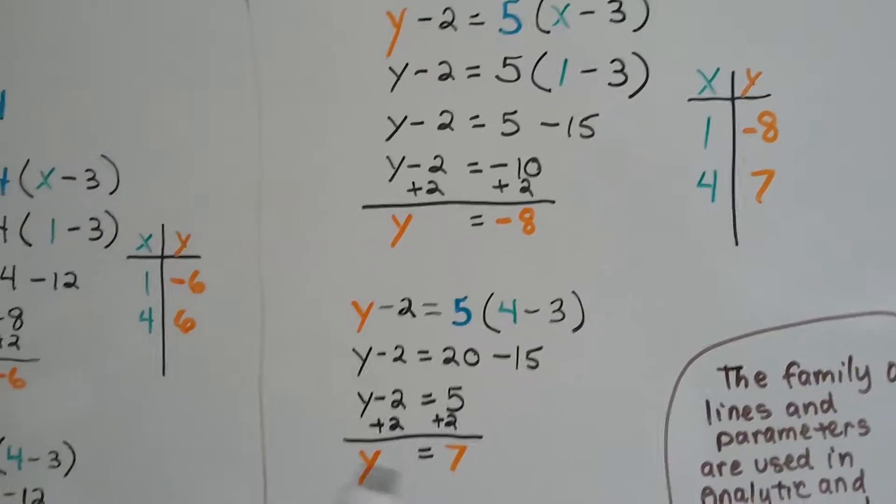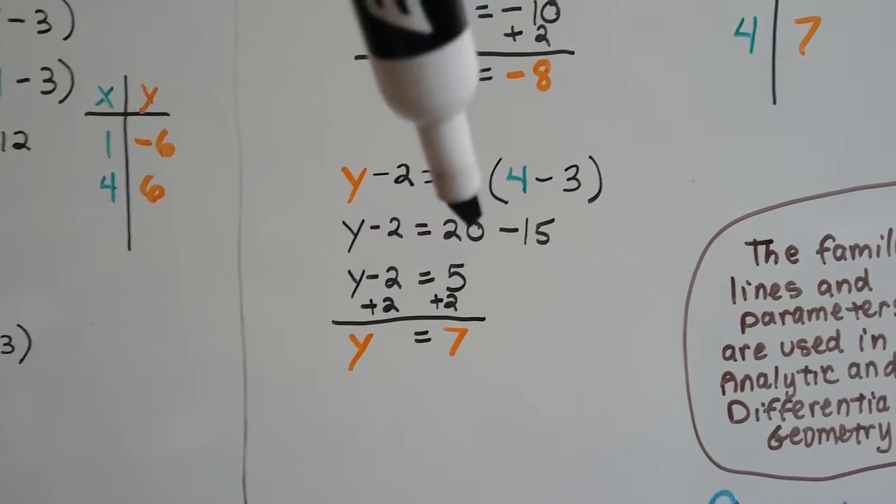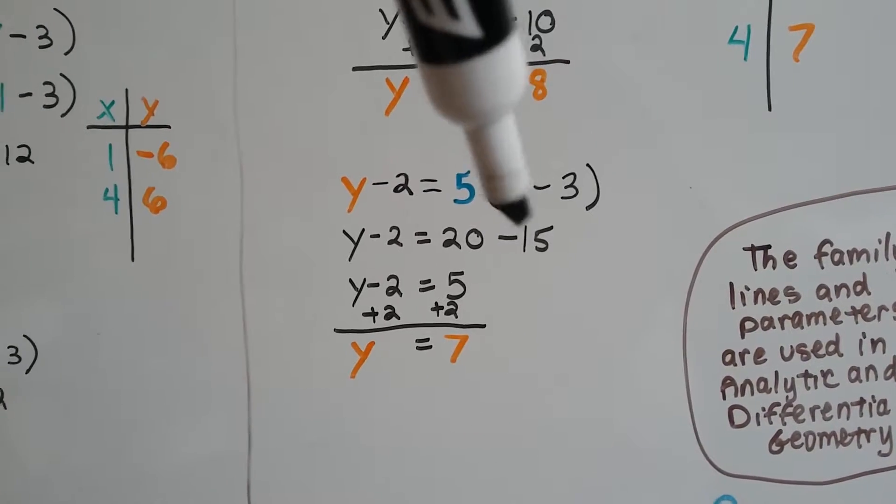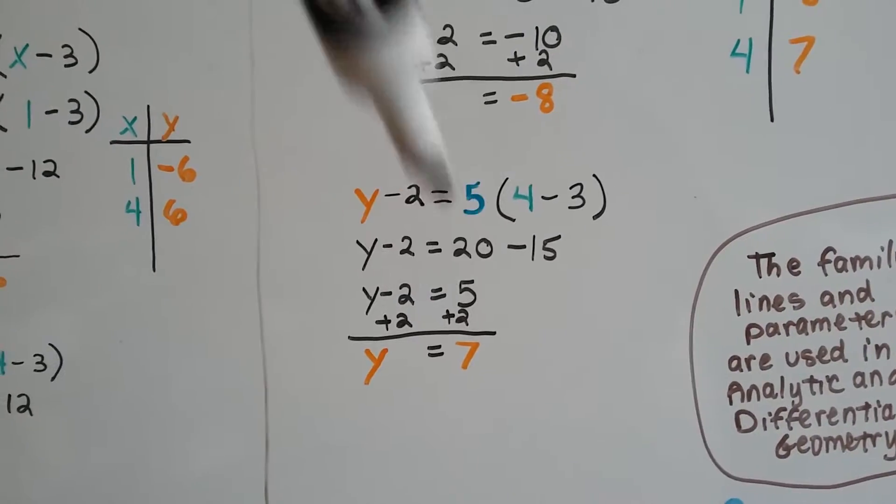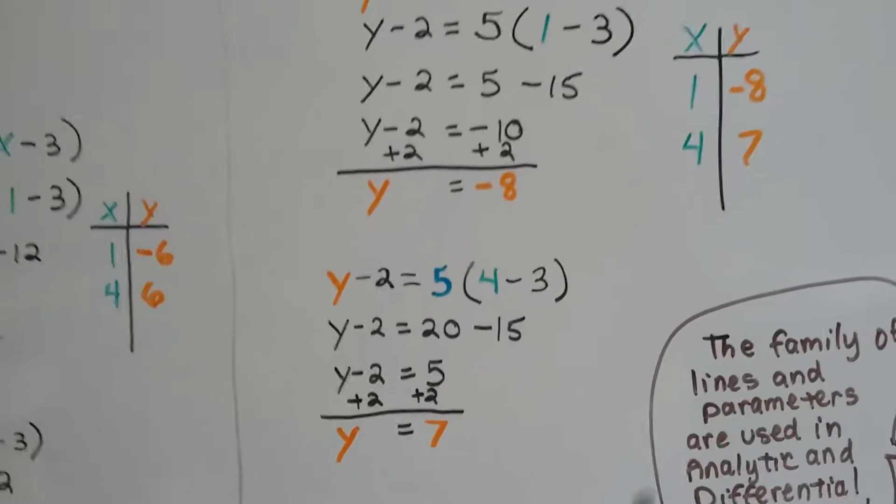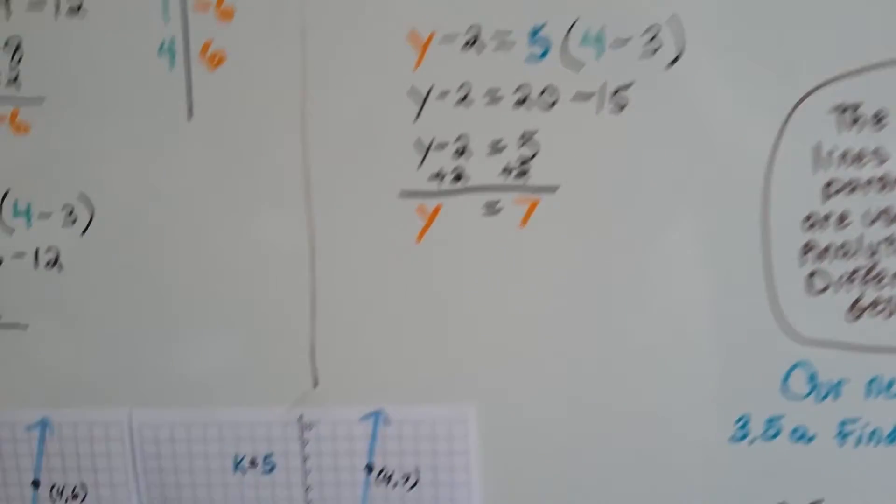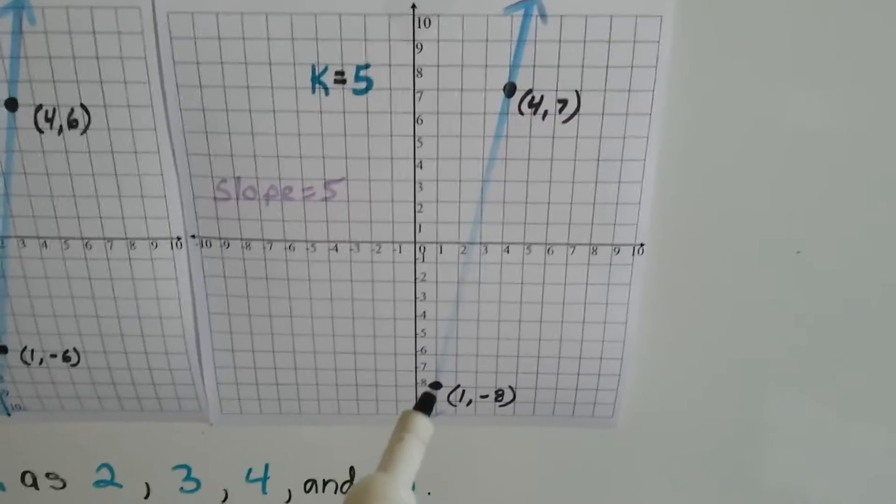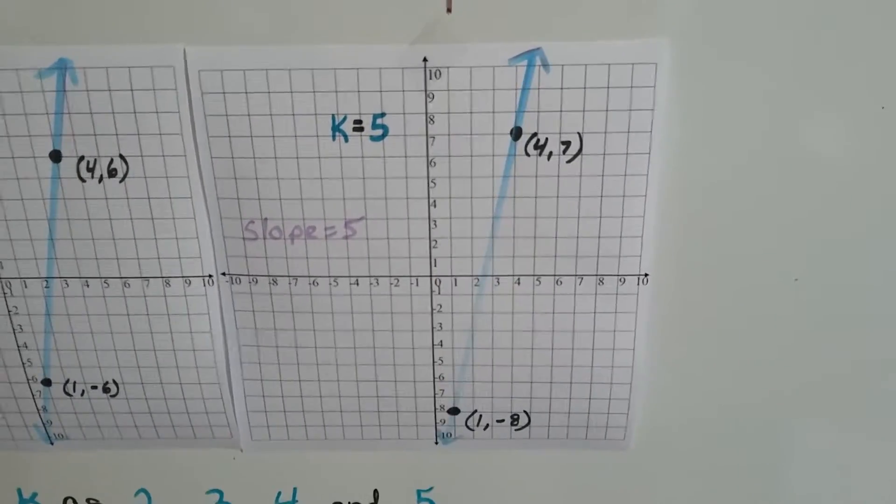Now let's set that x to equal 4 like we've done all along. Now we get 5 times 4 which is 20, minus 15, that's 5. Isolating the y, we add the 2 to each side again. We get y equals 7. So now we have these ordered pairs, 1 and negative 8, and 4 and 7. And we can graph that. Here's the 1, negative 8, here's the 4, 7, and we've graphed that.